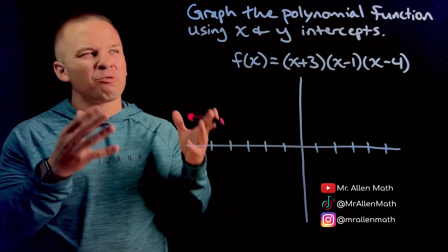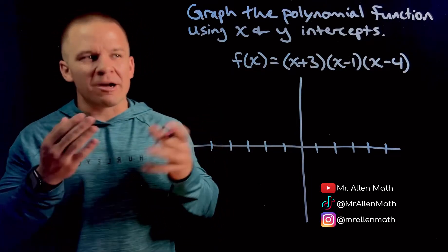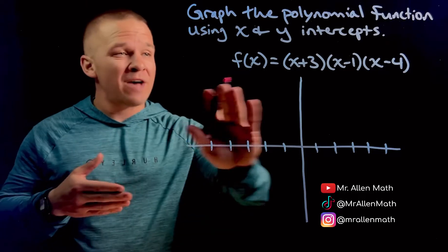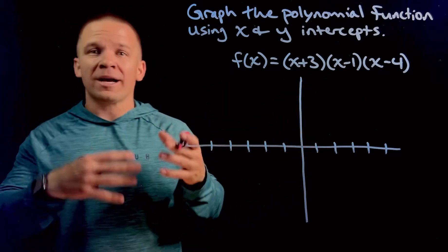What's happening, dogs? Mr. Allen here. We're about to graph this polynomial function using our x and our y-intercepts. So I have f of x equals that wonderful mess right there. What can I get from that?